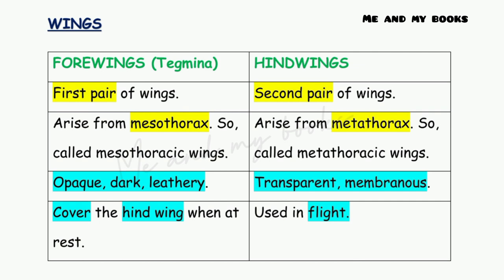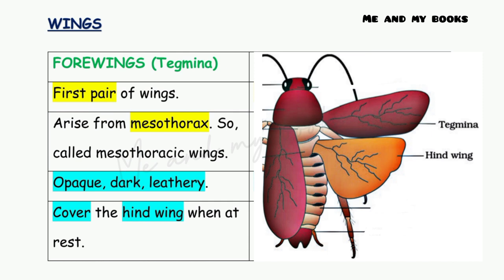Cockroaches have two types of wings: forewings (also called tegmina) and hind wings. The forewings are the first pair of wings, arising from the mesothorax and so called mesothoracic wings. They are opaque, dark, and leathery, and they cover the hind wings when the cockroach is at rest.